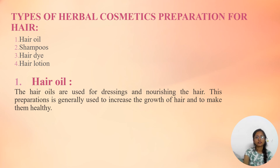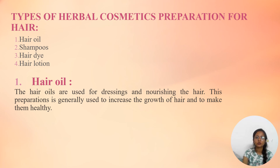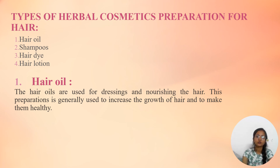Types of herbal cosmetics preparation for the hair: hair oil, shampoo, hair dye, hair lotion. First, discuss about the hair oils. Hair oils are used for dressing and nourishing the hair. This preparation is generally used to increase the growth of hair and to make them healthy. Herbal hair oil not only moisturizes the scalp but also reverses dry scalp and provides hair conditioning. It provides numerous essential nutrients required to maintain normal function of sebaceous glands and promote natural hair growth.